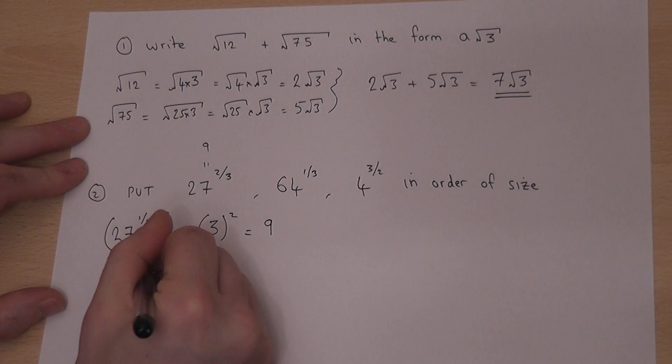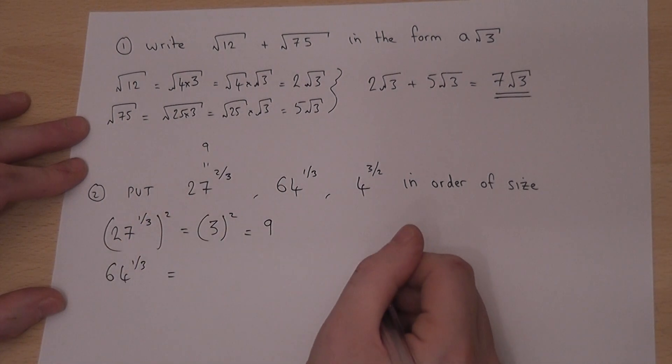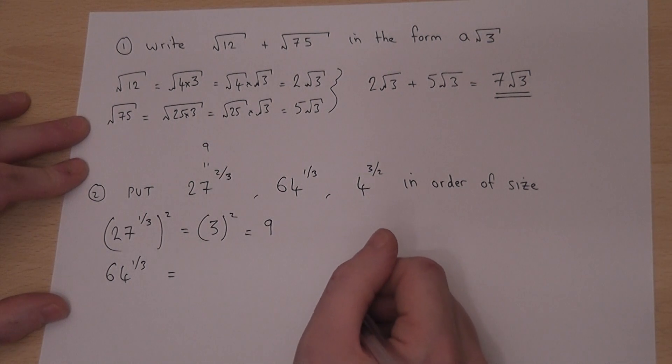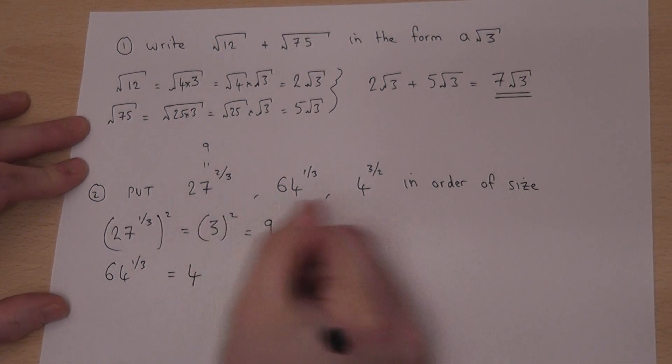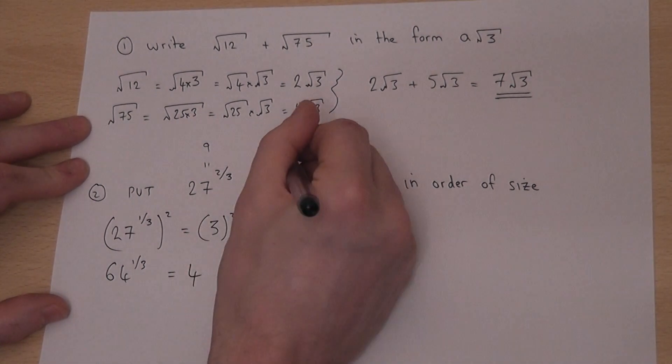64 to the 1 third, as already mentioned, 1 third means cube root. And the cube root of 64 is 4, because 4 cubed is 64. So therefore 64 to the 1 third is 4.